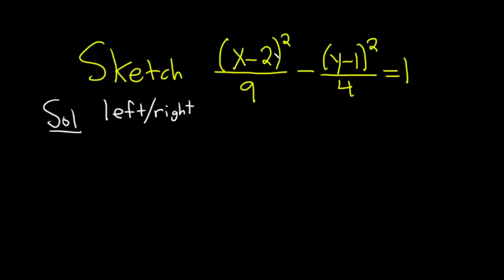We also know the center. To find the center you just switch the signs on these numbers — it's h, k. Remember the x goes with the h, the y goes with the k. So the center would be 2 comma 1. You just switch the sign.